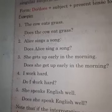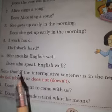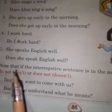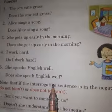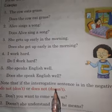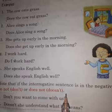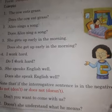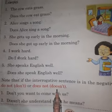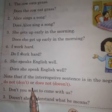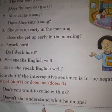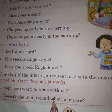Now note that if the interrogative sentence is in negative form, we begin it with 'doesn't' or 'don't.' So in simple present tense, if the sentence is negative, for example: 'Don't you want to come with us?' or 'Doesn't she understand what he means?'